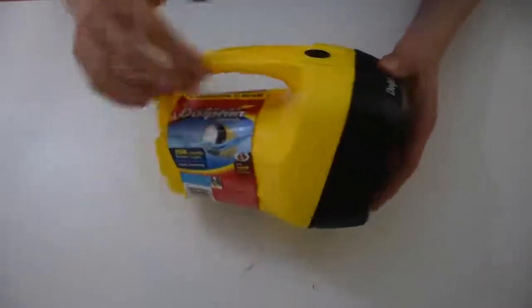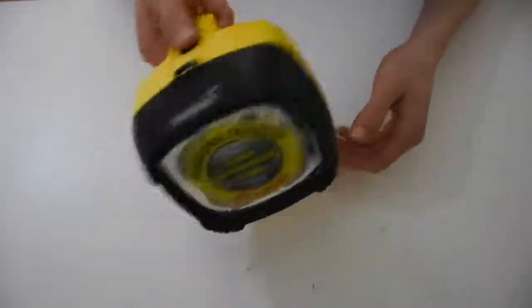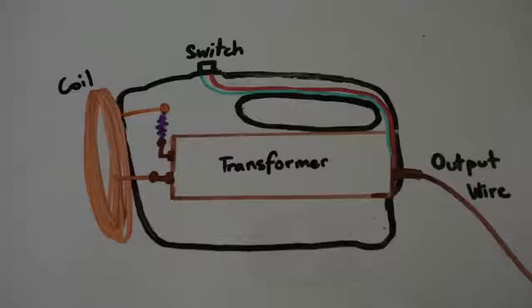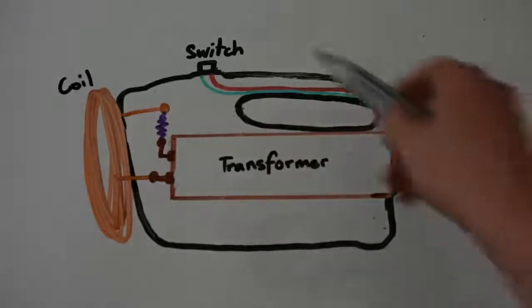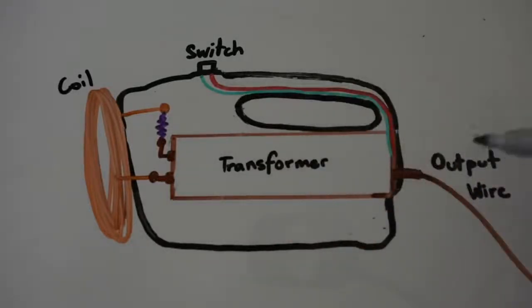For the housing of the EMP we'll use this dolphin torch. This is a design diagram for the EMP and it's basically the same as the previous one. In the middle we have our neon transformer and this is encased in our torch housing. It's powered by our DC output wire.